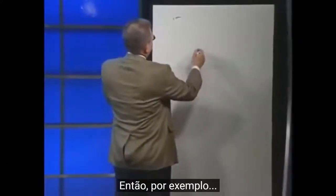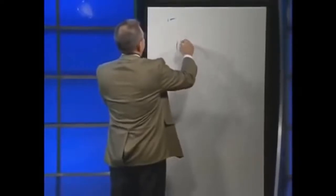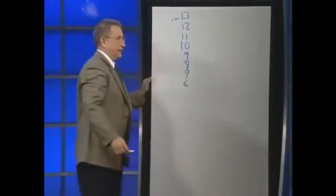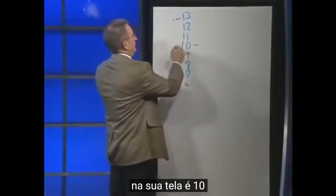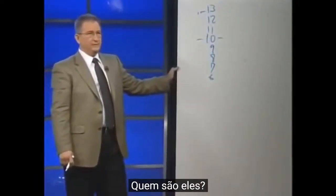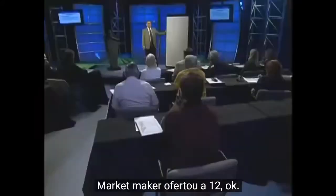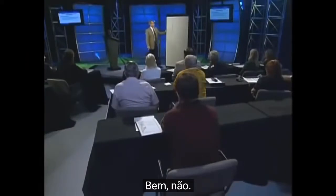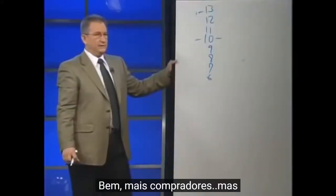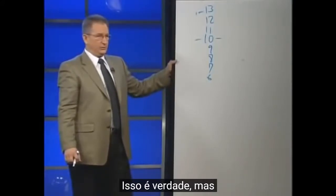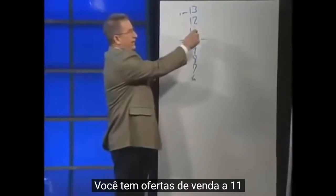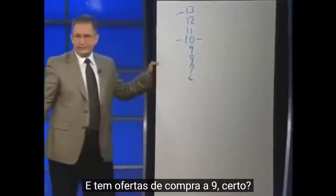If the last reported price you see on your screen is 10, how does it get to 11? At 10, what you have is offers at 11 and bids at 9. Everybody understands that.